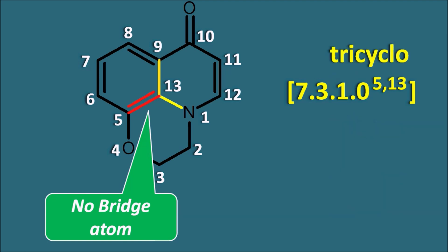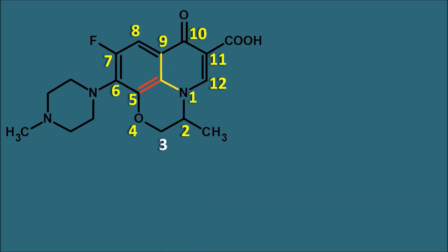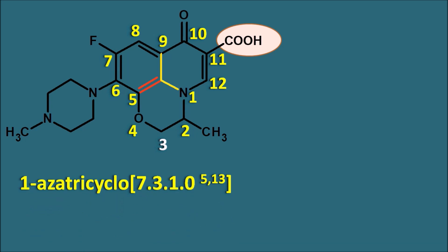We prefix this with 'tricyclo.' This tricyclic ring system has a nitrogen at the first position, so we write '1-aza.' The notation becomes 1-aza-tricyclo[7.3.1.0^(5,13)]. Using this notation, let us now write the complete name of ofloxacin. The ring system has a total of 13 atoms including the central atom, so it is indicated as 'trideca.' This tricyclo ring system also has double bonds at different positions.